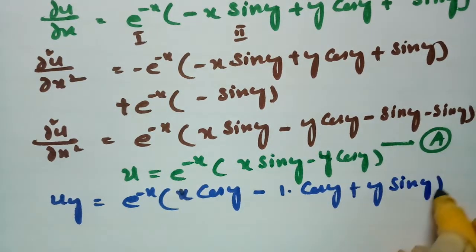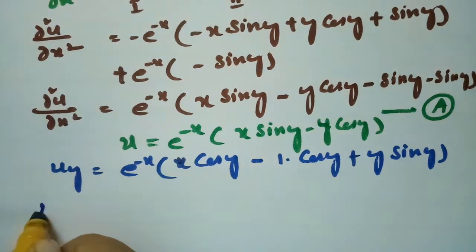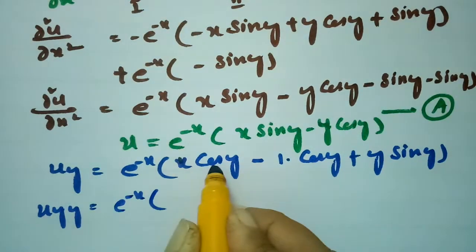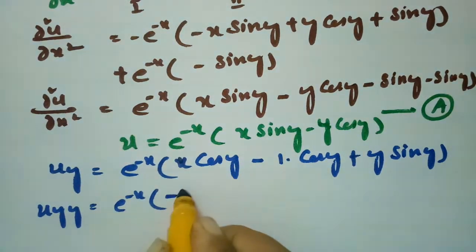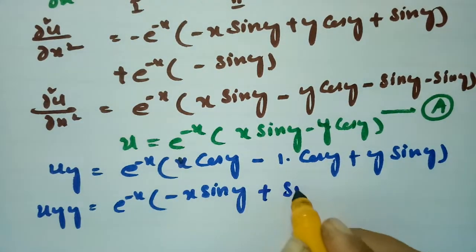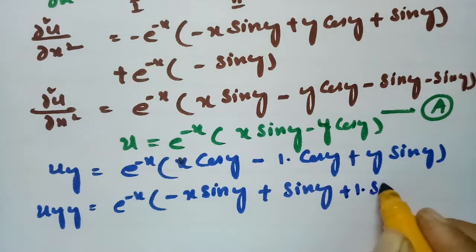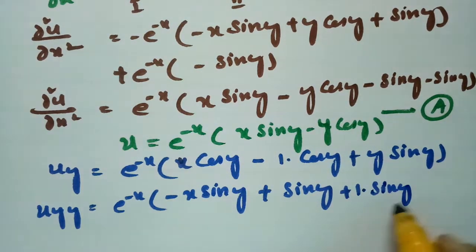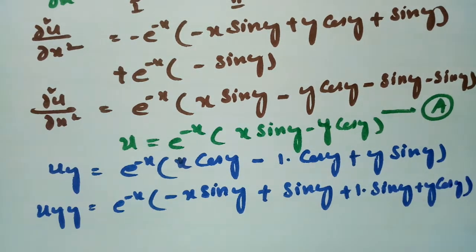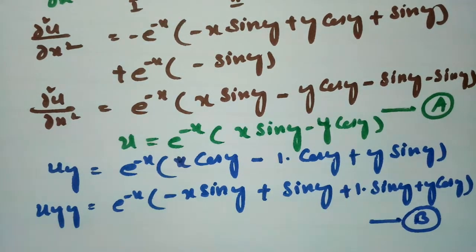Now making the second derivative with respect to y: ∂²u/∂y² = e^(−x) times [−x·sin(y) − (−sin(y)) + sin(y) + y·cos(y)], which gives e^(−x)(−x·sin(y) + sin(y) + sin(y) + y·cos(y)). This is equation (b).